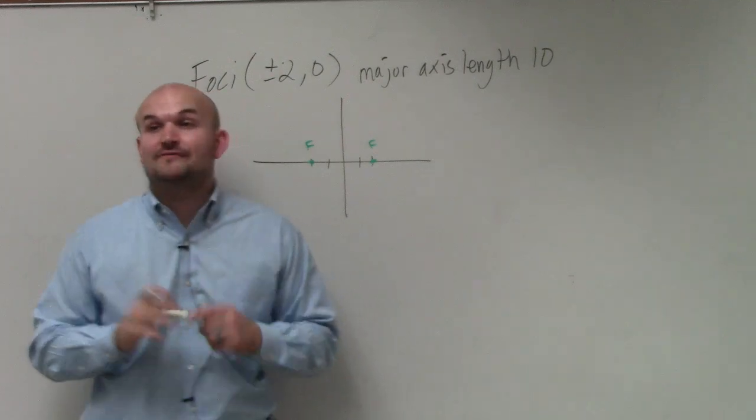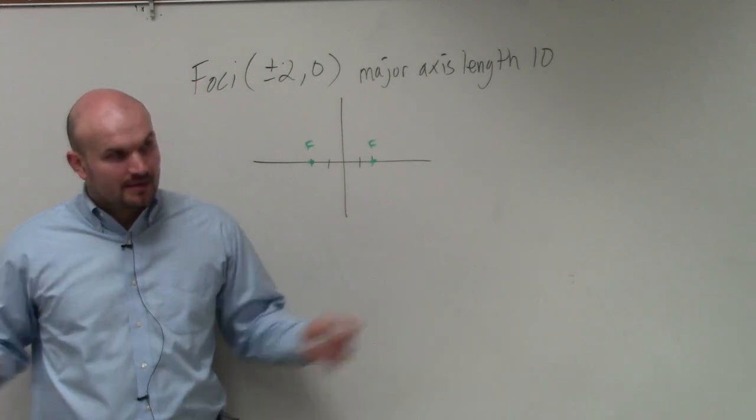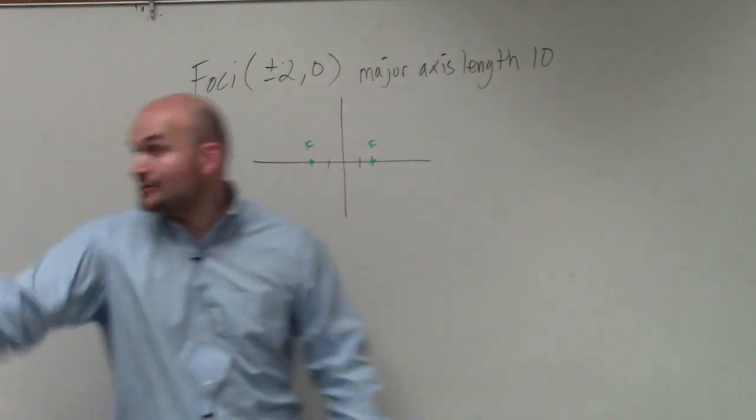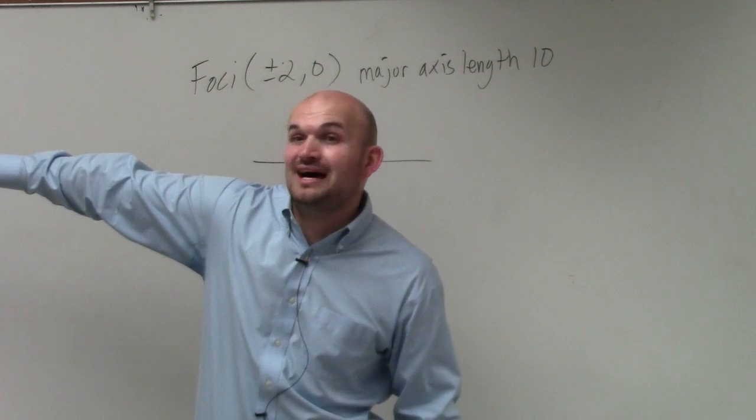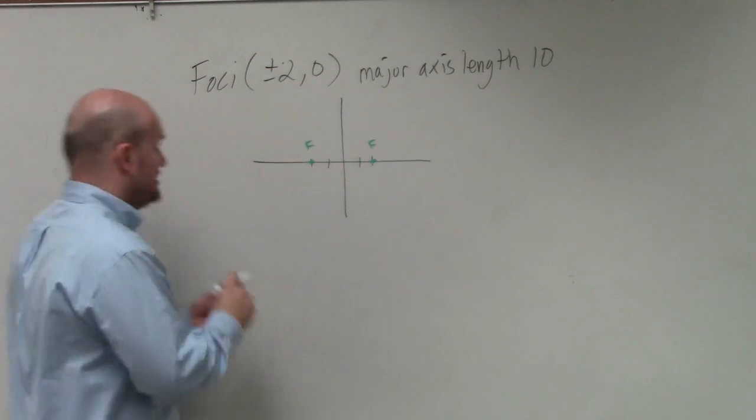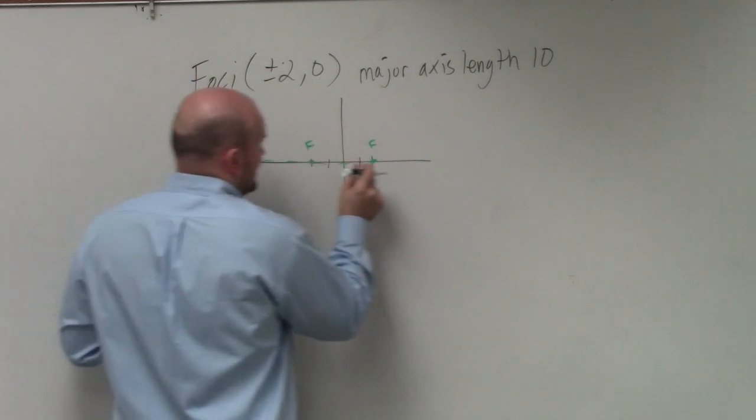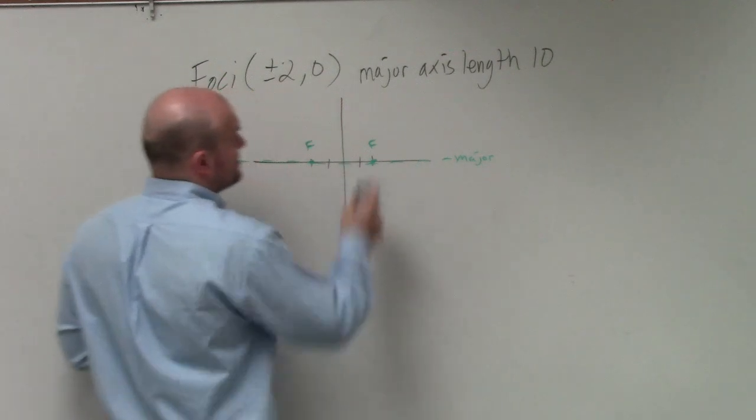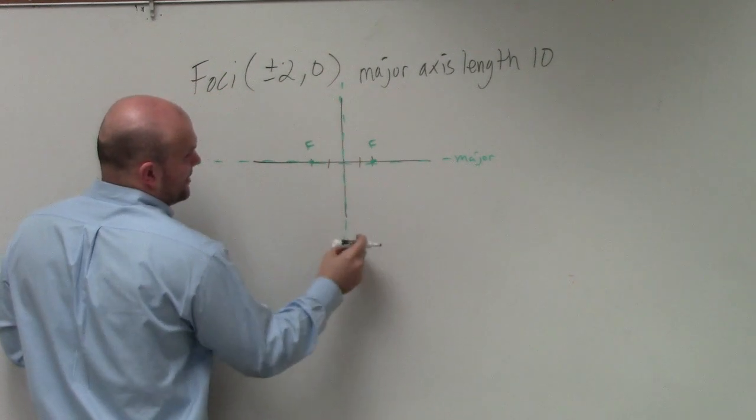Now that tells me a lot of information already right there, because now that I know that the foci lie on this line, which is the x-axis, I know that the foci have to lie on the major axis. So therefore, I know that this line right here is the major axis, which is the x-axis. That's nice. This line is the minor axis.